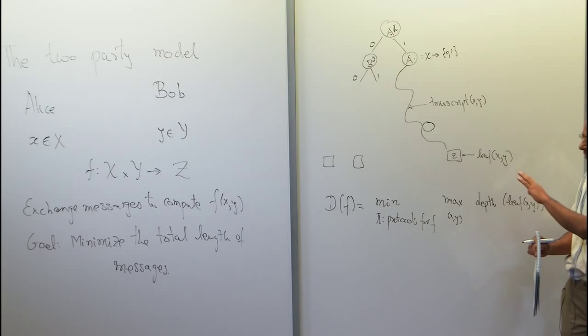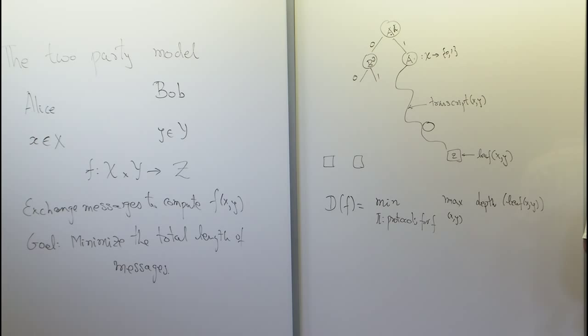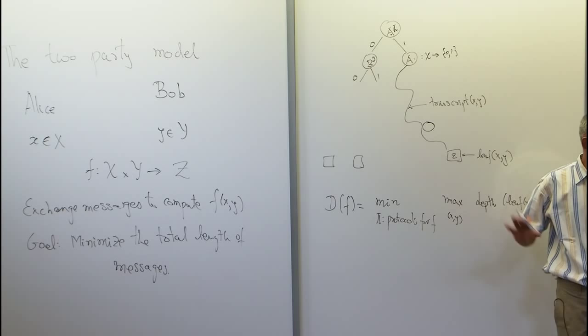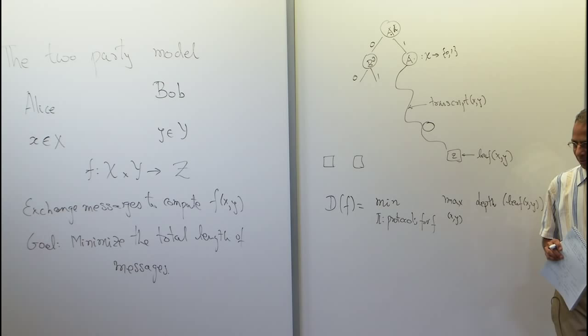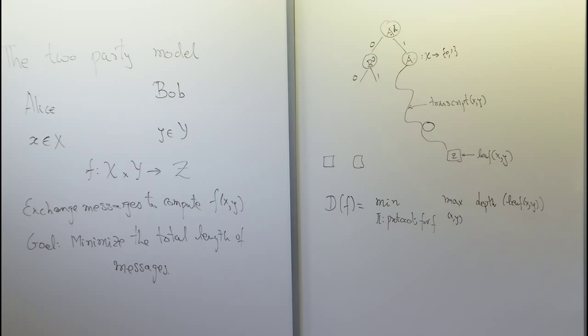This is a reasonably good way to start. Many recent results on communication complexity, when they talk about compression and information costs, actually use the protocol tree in this form. So it's no big loss not to have done the original definition.